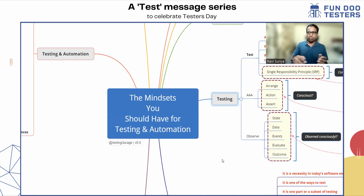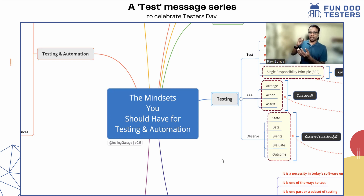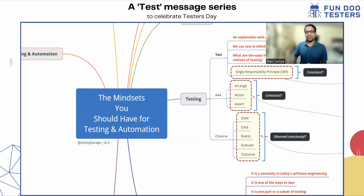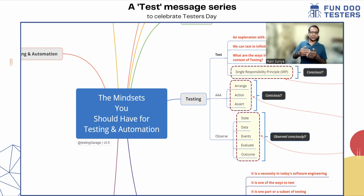Testing has got multiple things within it, and a test is one part of testing. I understand a test as an exploration with a specific purpose to learn. It has a specific intent, and we can test in infinite ways. I also understand that a single responsibility principle — SRP — is associated with a test. We often hear SRP for programming, but in my practice I see SRP associated with a test, bug reporting, and many more.